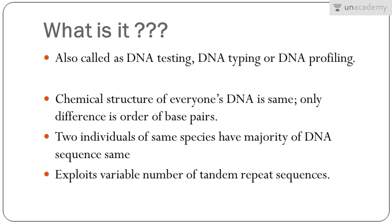A DNA fingerprint of an individual is the description of specific alleles present at a series of polymorphic loci in his or her genome. A polymorphic locus is a region of the genomic DNA whose sequence differs between individuals. Since the chemical structure of everyone's DNA is the same, the only difference between persons is the order of the base pairs. DNA profiling exploits highly variable repeat sequences to distinguish individuals of the same species.